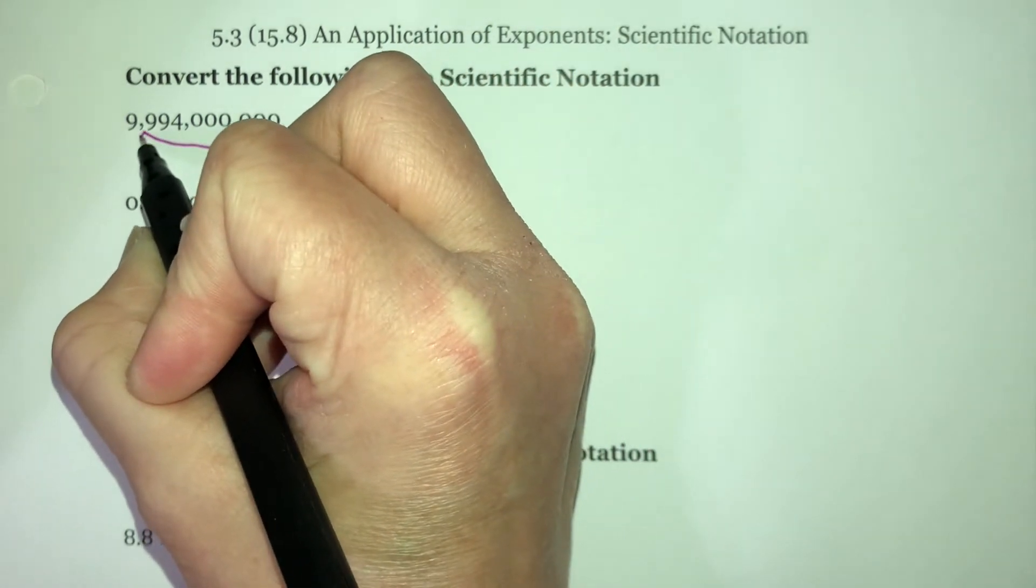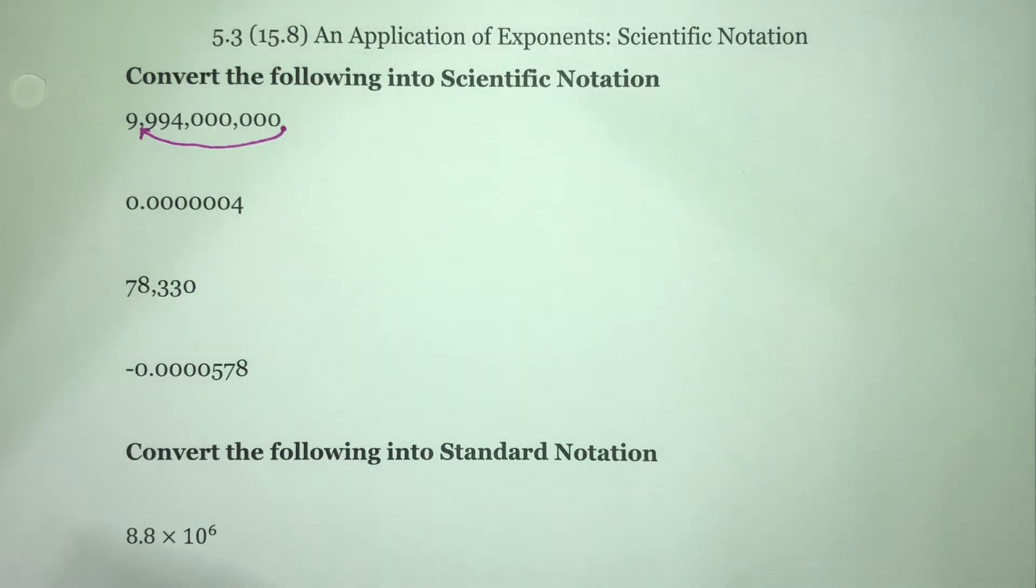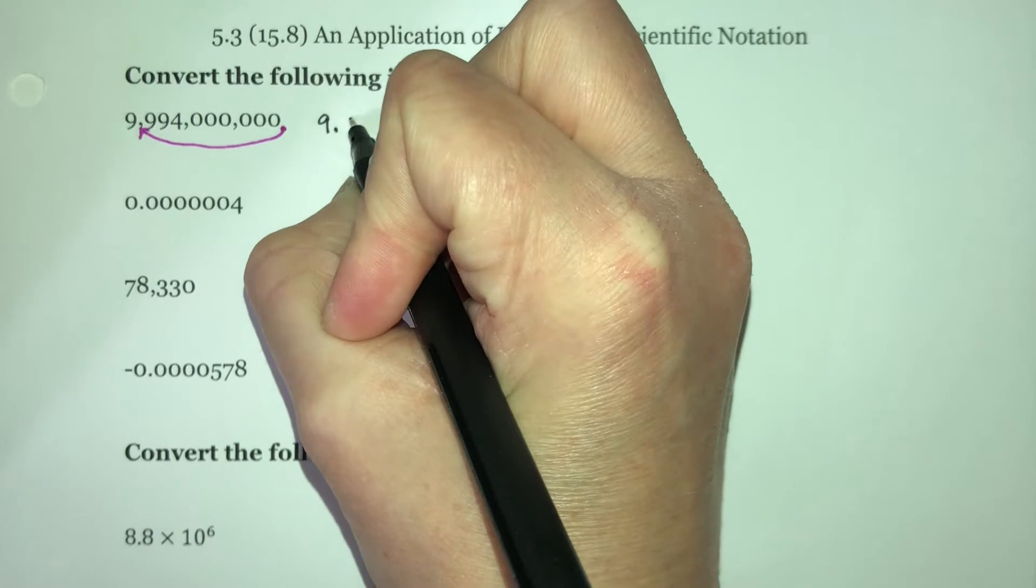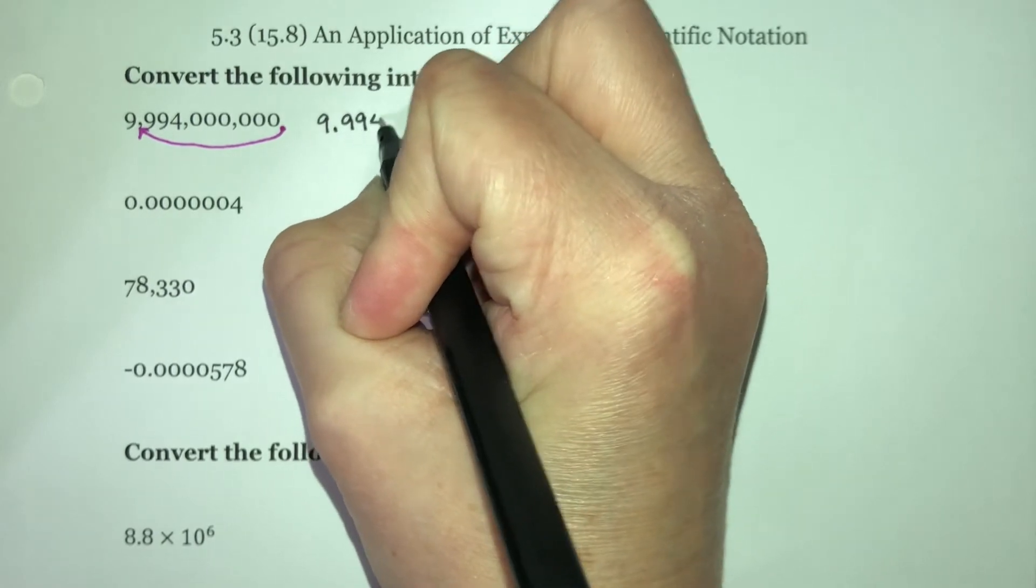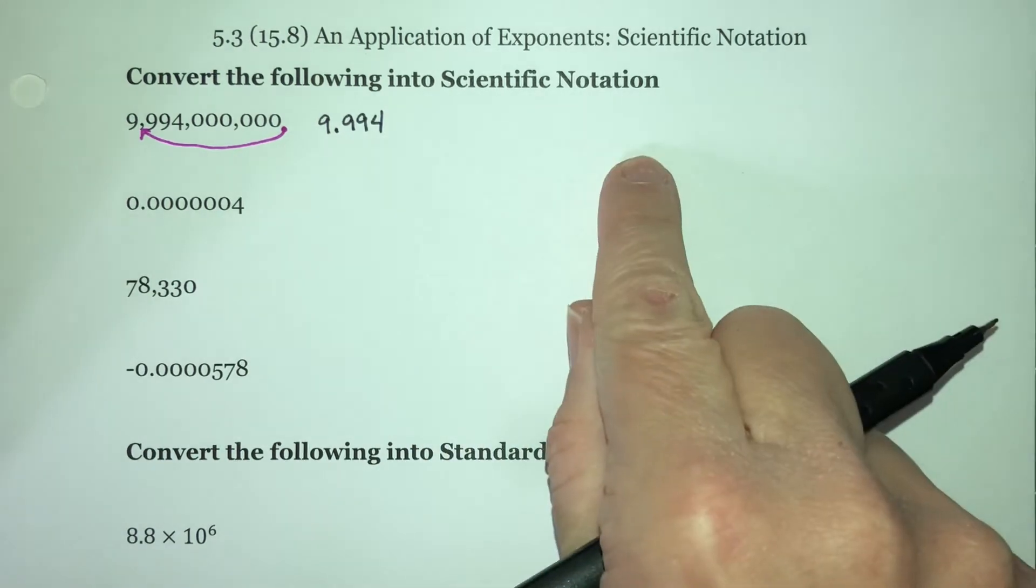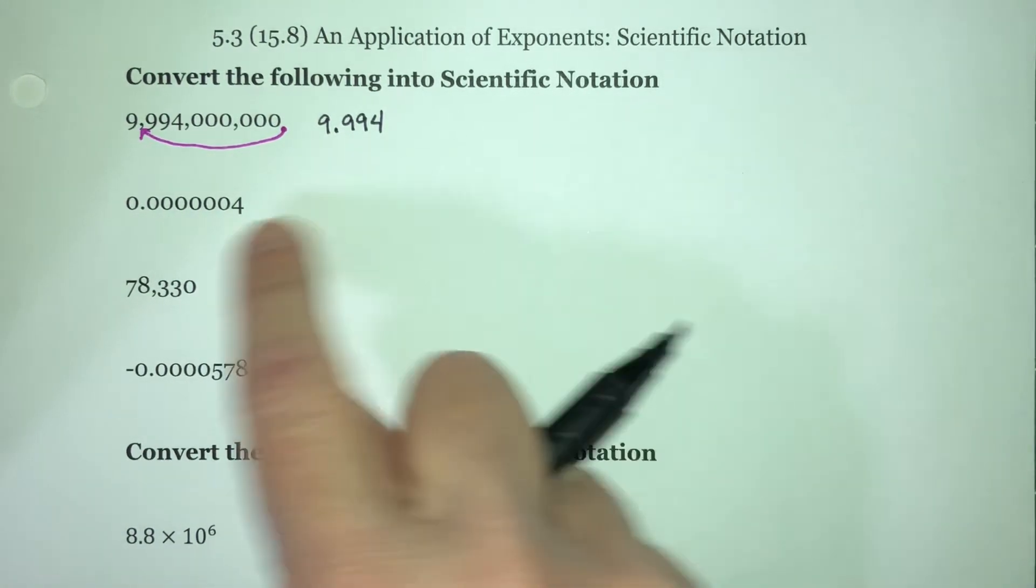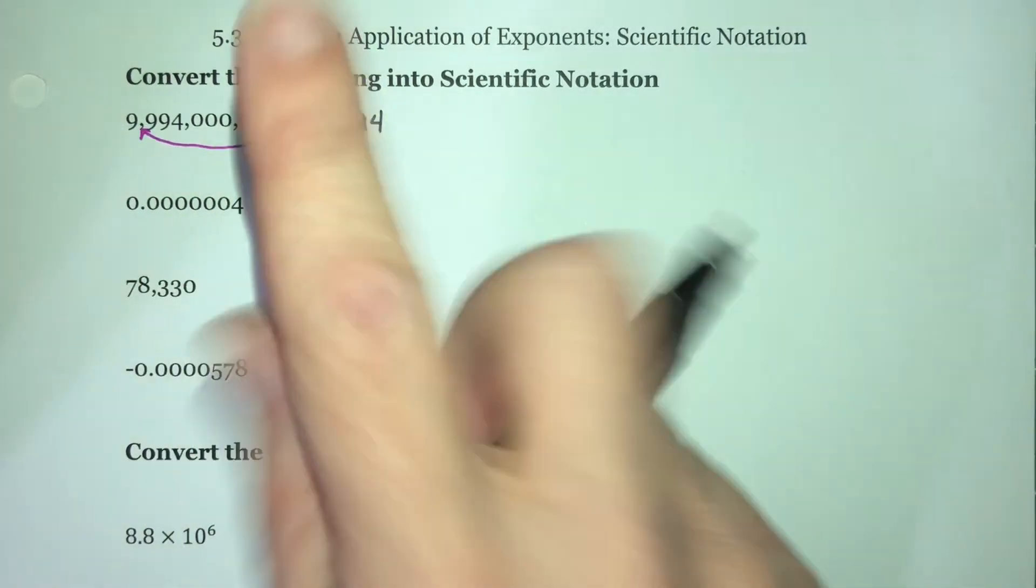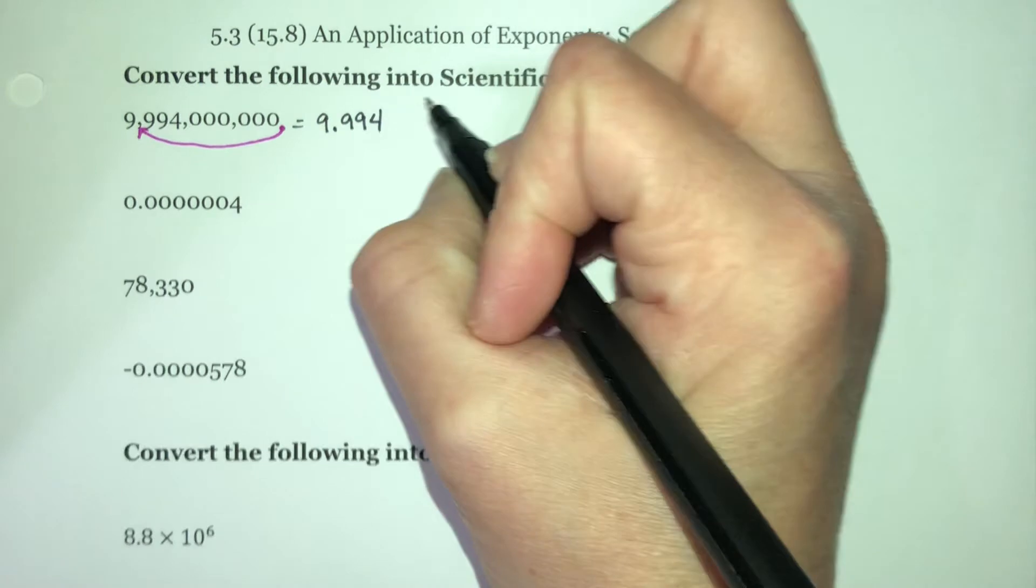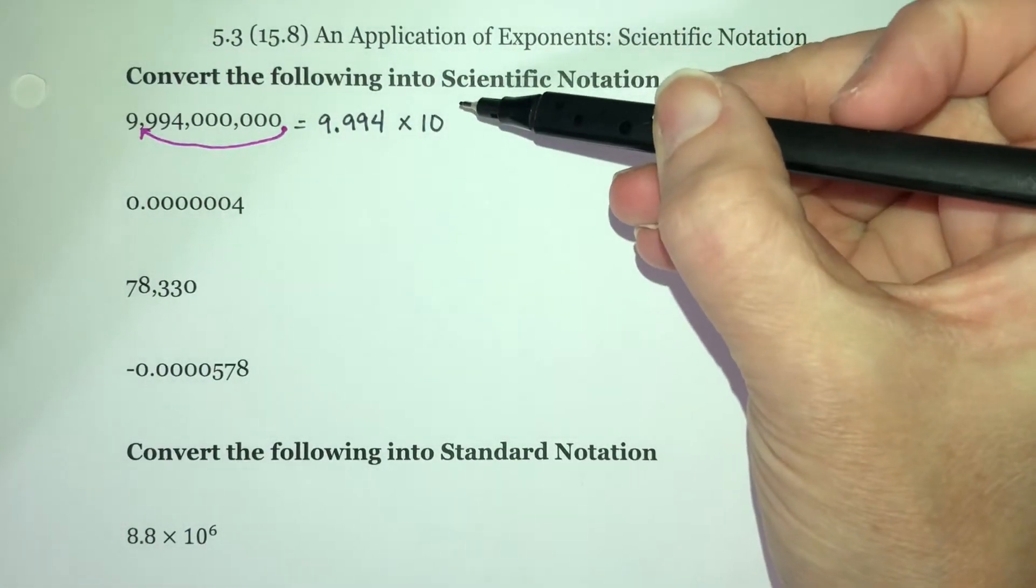So what we have is 9.994. Now all the rest of these zeros don't mean anything on the right-hand side of a decimal point, so we can just drop them off. Now this is definitely not the same thing, so we have to put in an adjustment. We always do times 10 to some power.